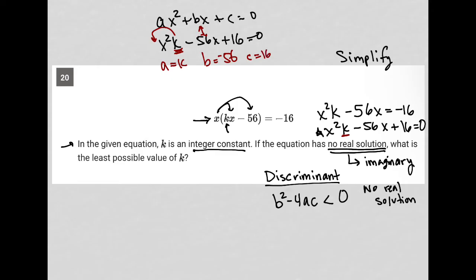I plug those numbers in: b² is (-56)² minus 4 times a, which is k, times c, which is 16.